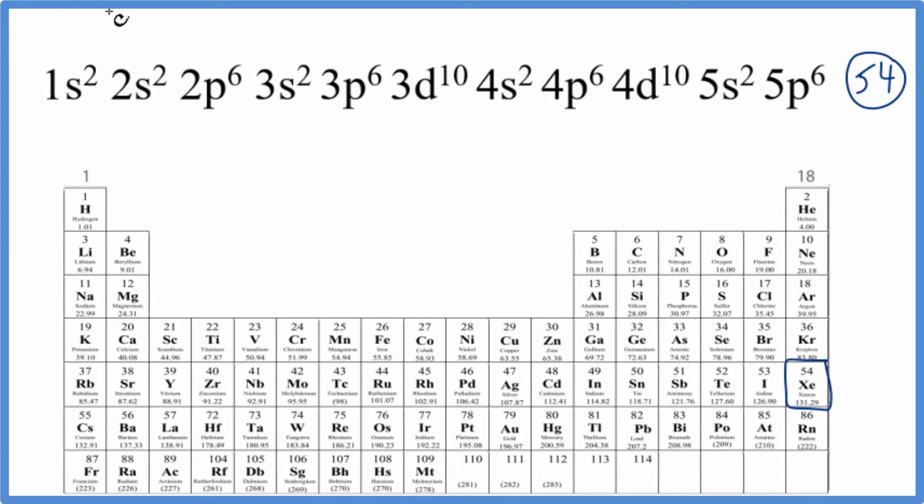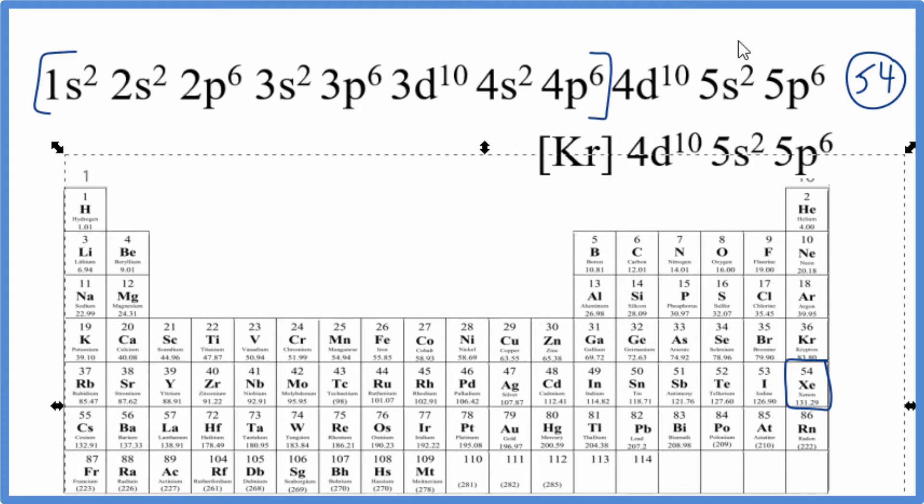So this electron configuration right here is for xenon. We could also make this a little bit easier to work with by writing it in condensed notation. So we find the noble gas before xenon, that would be krypton right here. And we can take 36 electrons right here. This is 36. And we could just write Kr for krypton instead of all of this. That would look like this right here. So this is the condensed notation for krypton's electron configuration.